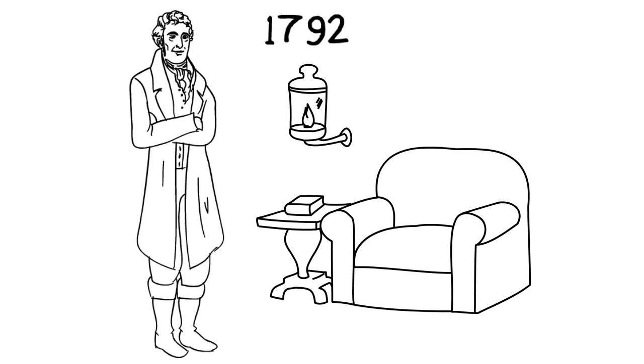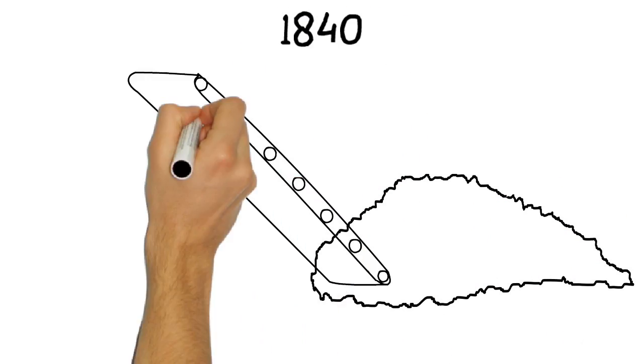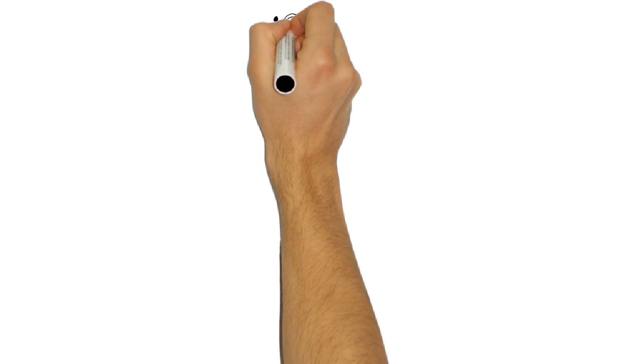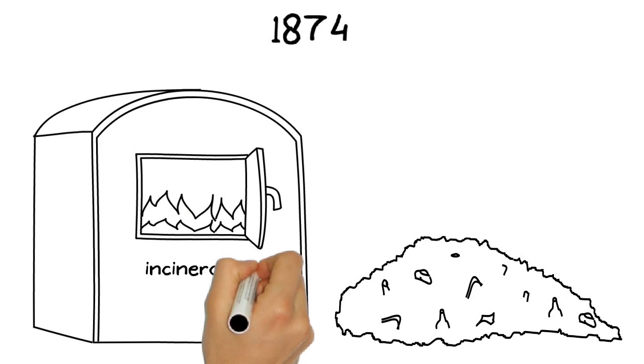Though coal was used primarily for heating and cooking, it opened the door to greater applications, like in 1840 when the first commercial gasifiers were built in France. In 1874, Britain began using energy from waste with the first incinerator designed by Albert Fryer.